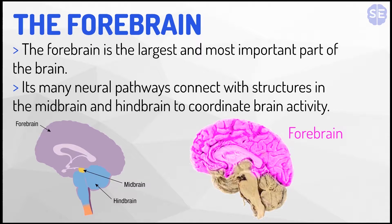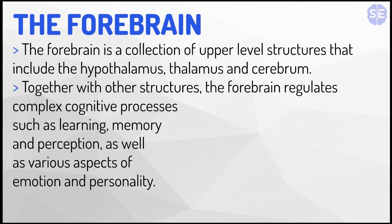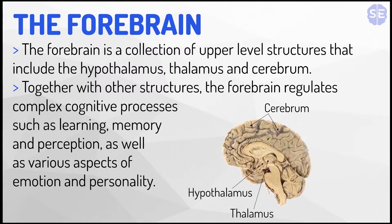The forebrain is the largest and most important part of the brain. Its many neural pathways connect with structures in the midbrain and hindbrain to coordinate brain activity. Here you can see the forebrain in the pink, and here you can see how it interacts with the midbrain and hindbrain. The forebrain is a collection of upper-level structures that include the hypothalamus, thalamus, and cerebrum, as demonstrated in this diagram here.